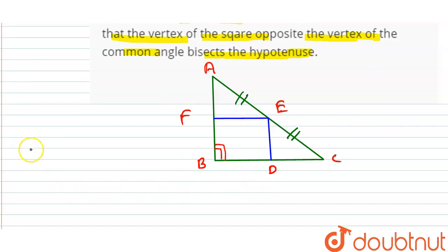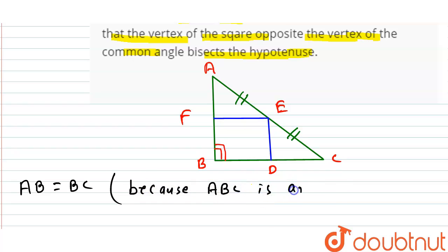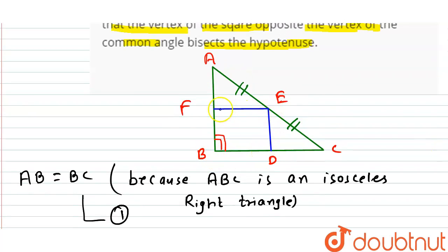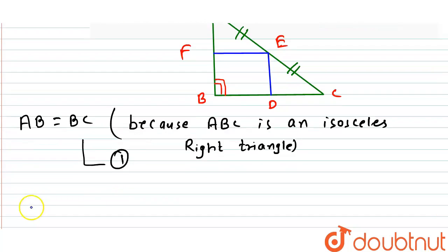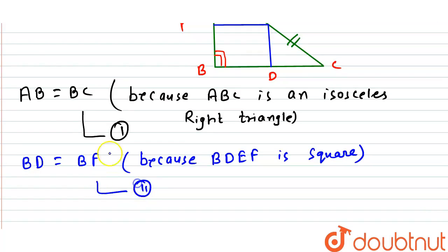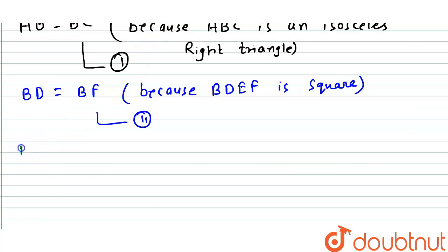What is given: ABC is an isosceles right triangle, so AB equals BC — this is equation number one. Also, BDEF is a square, so BD equals BF — this is equation number two.